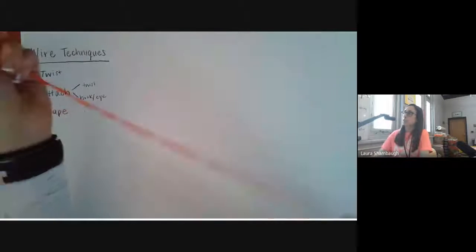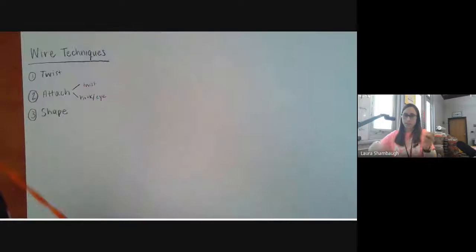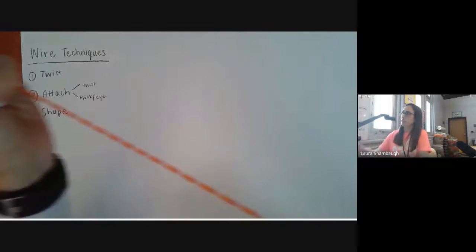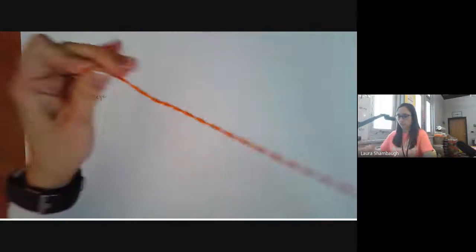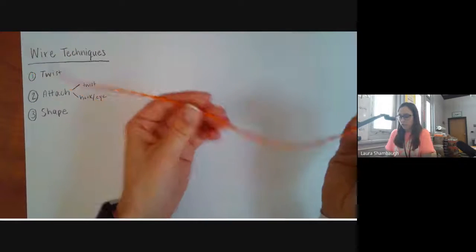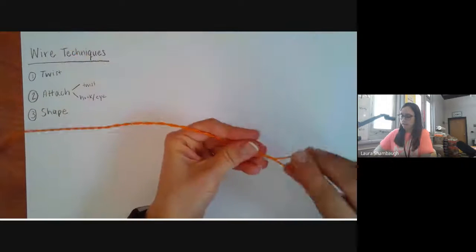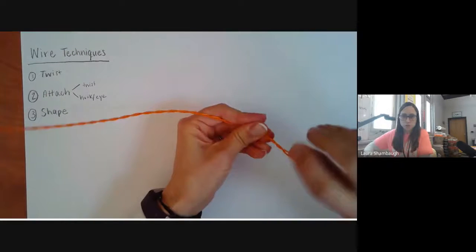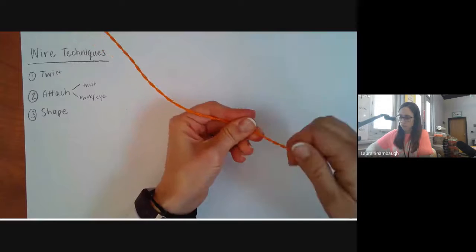You do this by simply twisting it. I'm holding it up here and just making it into like rope. That makes it stronger, more stiff, and better for building the structure or the base of your wire sculpture.